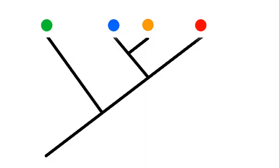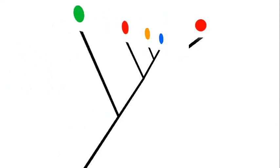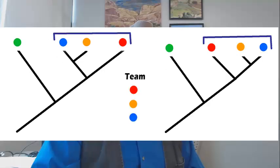Note that we can twist the branch at the node, so the ends of the branches change position, but we don't break the branch. So the arrangement of the trees are similar.